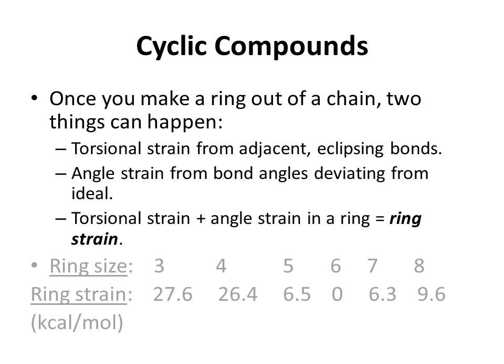If you look at the correlation between ring size and ring strain in kilocalories per mole, the highest ring strain is found in the three-membered ring cyclopropane at 27.6 kcal/mol. As you increase the ring size, the ring strain decreases until you reach the six-membered ring, which has no ring strain. As ring size increases above six-membered, there is additional ring strain — cycloheptane has 6.3 kcal/mol and cyclooctane has 9.6 kcal/mol, mostly from deviation from ideal bond angles — angle strain.